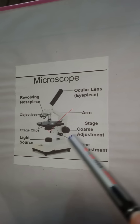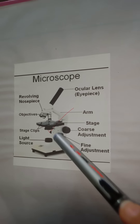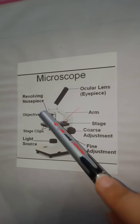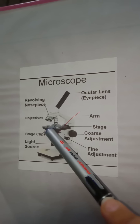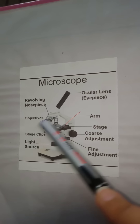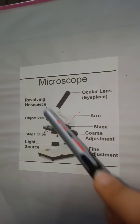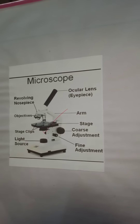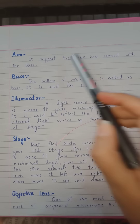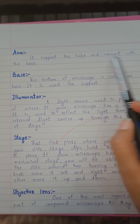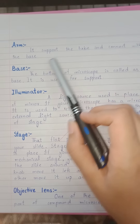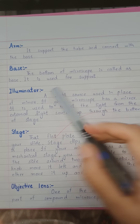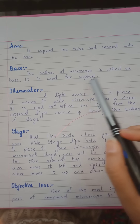This is the stage, this is the coarse adjustment, this is the fine adjustment, this is the light source, these are the stage clips, these are the objectives, and these are the revolving nosepiece. The arm supports the tube and connects with the base. The bottom of the microscope is called the base.